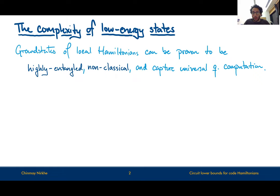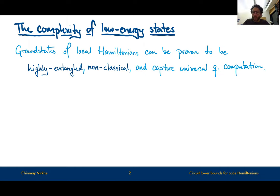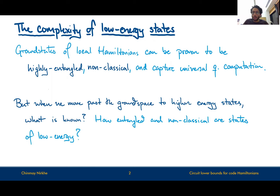The starting point for this talk is the complexity of low energy states for local Hamiltonians. While ground states of local Hamiltonians are known to be highly entangled non-classical objects that simultaneously capture universal quantum computation and describe quantum mechanics, the complexity of their low energy counterparts is sort of strange. Ground states are these amazing mathematical objects which bridge our understanding of computer science and physics, and yet their low energy counterparts, which are more physically realizable, are something we don't have as good mathematical understanding of.